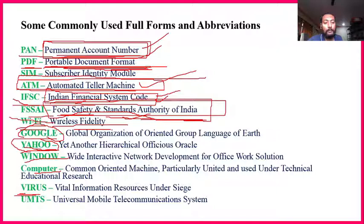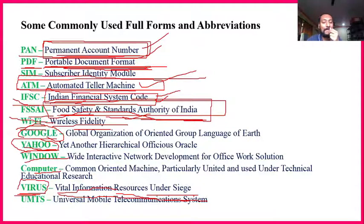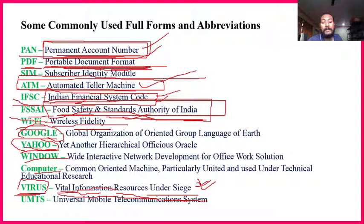VIRUS — Vital Information Resource Under Seize — is important. You need to know the full form. Before your data gets seized, you should get a warning like a red mark saying your pen drive is infected. You should then delete or clean that virus — it is vital information that has been seized.